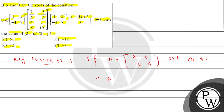The inverse is found as 1 upon determinant of A, then interchange the diagonal elements and change the sign of the non-diagonal elements. This is the key concept for finding the inverse of a 2x2 matrix.